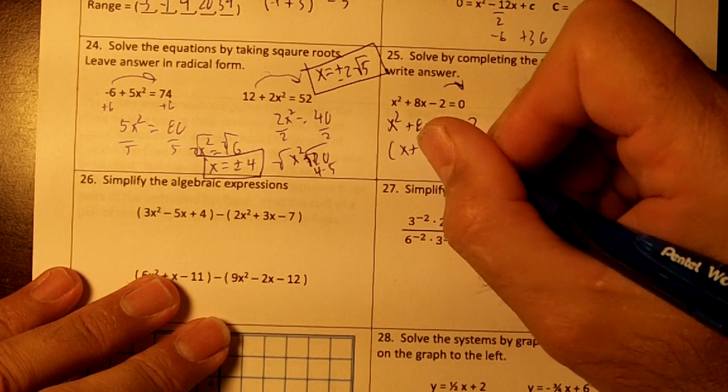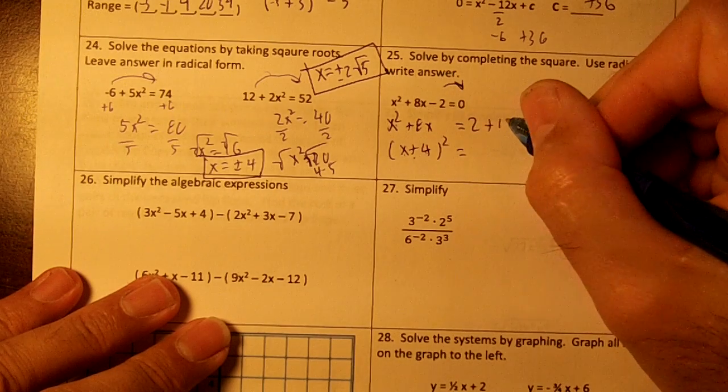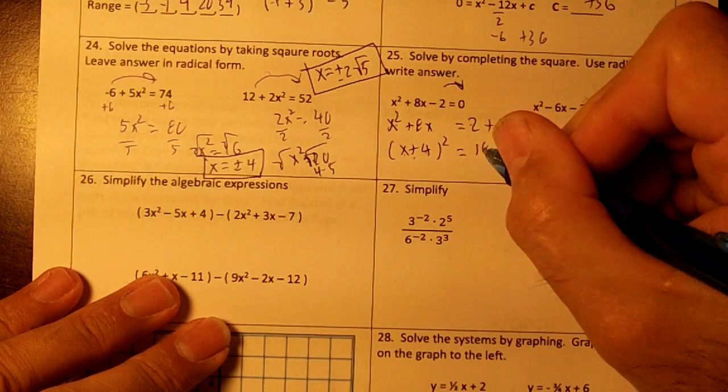8 divided by 2 is 4. Drop your x, drop your plus. 4 squared is 16. 16 plus 2 is 18.